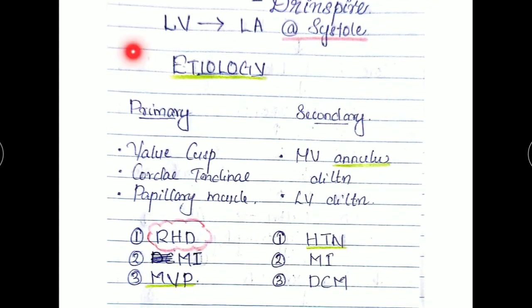First of all, the cause, the etiology of mitral regurgitation can be classified as primary and secondary. Primary is when there are any abnormalities occurring in the valve cusp, chordae tendineae, or the papillary muscle. Primary cause of mitral regurgitation in India is rheumatic heart disease. Also, mitral valve prolapse can predispose to mitral regurgitation, and myocardial infarction which can damage the papillary muscle resulting in primary MR.